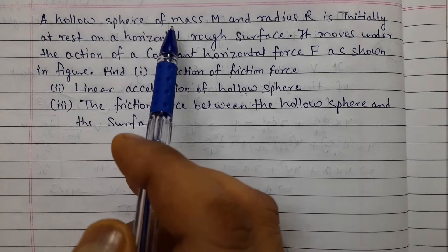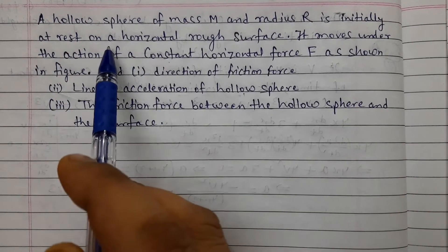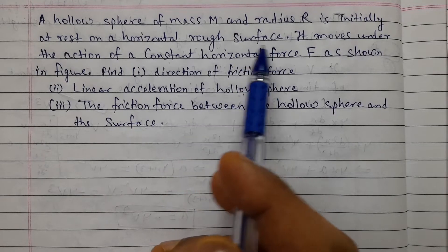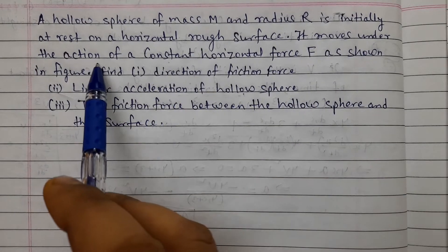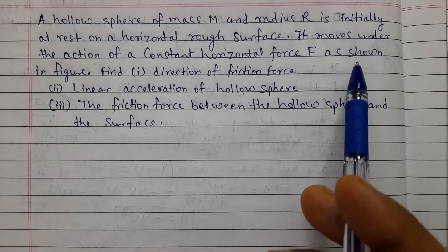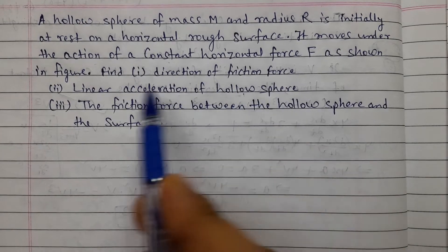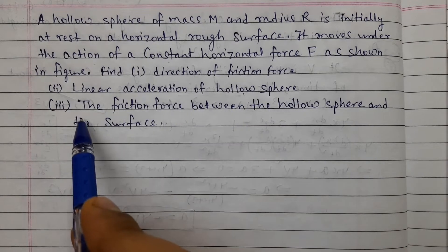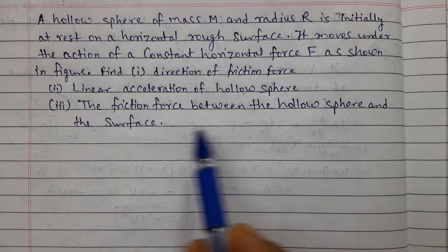A hollow sphere of mass M and radius R is initially at rest on a horizontal rough surface. It moves under the action of a constant horizontal force F as shown in the figure. Find: first, the direction of friction force; second, the linear acceleration of the hollow sphere; and third, the friction force between the hollow sphere and the surface.